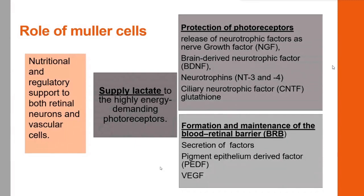Muller cells provide nutritional and regulatory support to both retinal neurons and vascular cells. They supply lactate to the highly energy-demanding photoreceptors and protect them by releasing neurotrophic factors such as nerve growth factor, brain-derived neurotrophic factor, neurotrophins, ciliary neurotrophic factor, and glutathione. They also play a role in the formation and maintenance of the blood-retinal barrier by secretion of factors such as VEGF and pigment epithelium-derived factor.